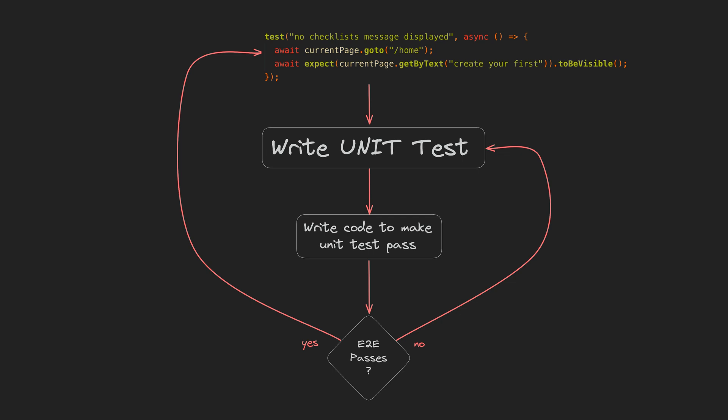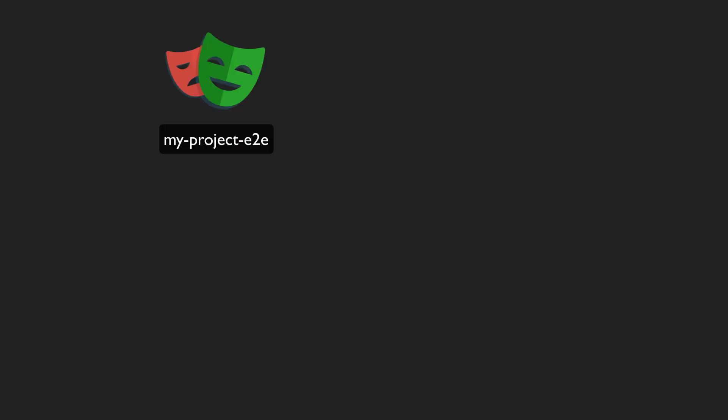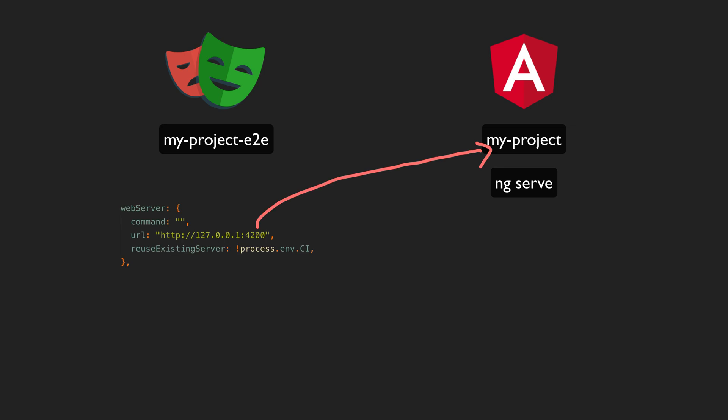We tell our testing robot to go to the home page, try to find an element that contains the text 'create your first', and expect that to be visible on the page. I've used Cypress for end-to-end tests quite a lot but here I am using Playwright. I'm not going to get too much into the setup here as both of these tools have great getting started guides and use more or less the same concepts. For this specific case I have my end-to-end tests in a separate project created with Playwright. To run the tests I can just serve my Angular application on port 4200 as usual, point my Playwright project to that and run this command. This can all be configured automatically for a CI environment if necessary.